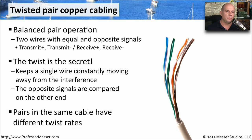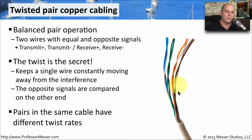To also help remove common-mode interference, the different pairs of wires within the same cable are twisted at different rates. So it's this combination of balanced-mode operation, the twist within the individual pairs, and the different twist rates that help us remove all of the interference from that cable once the signal is received on the other side.